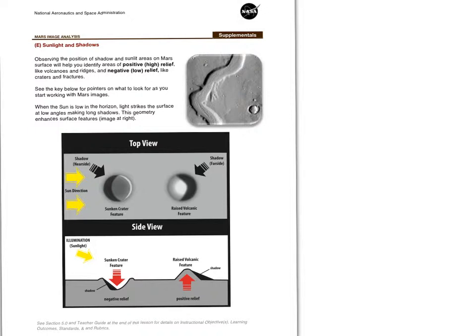As we talked about, clearly the direction of the sunlight and how shadows are cast on these images are very important for us to interpret the features that we see in the images — whether a feature is a topographic rise or if it's an indentation. That's pretty much the main thing we use shadows for.